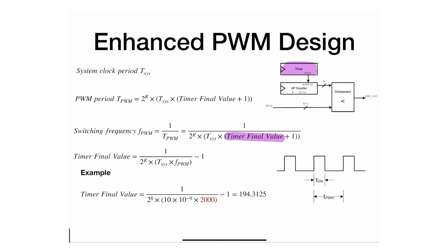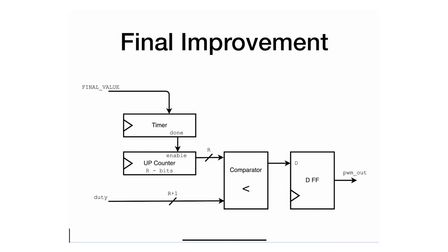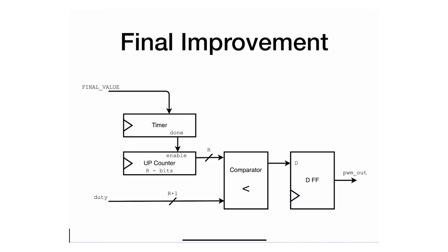You'll need to round to either 194 or 195 — you won't get exactly 2000 Hz, but slightly above or below, which is acceptable. This enhanced design exposes the final value as an input so the switching frequency can be changed dynamically, along with the duty cycle.